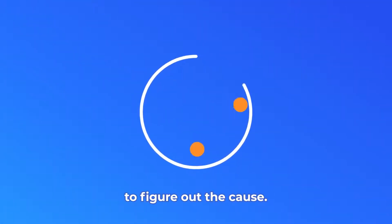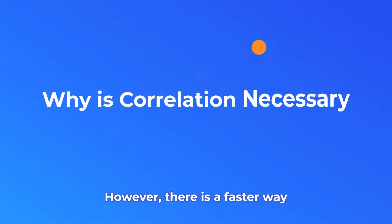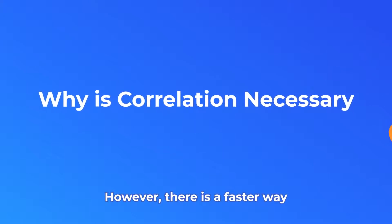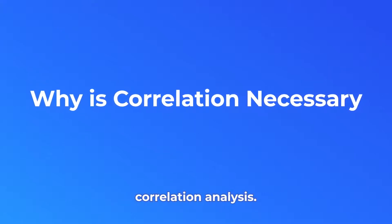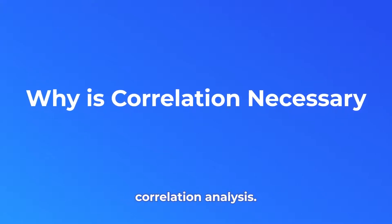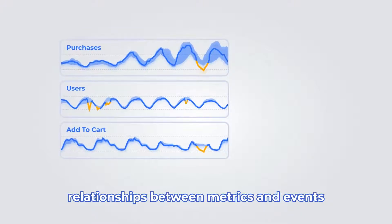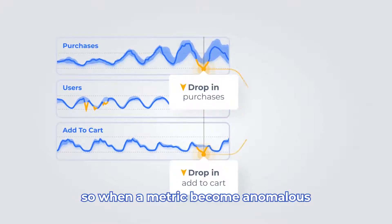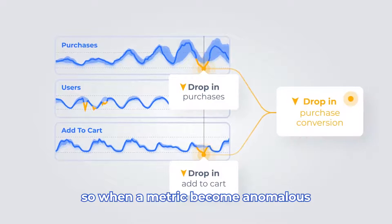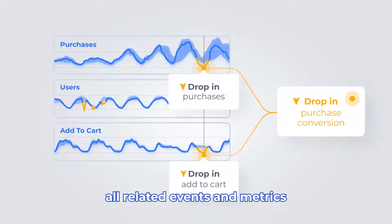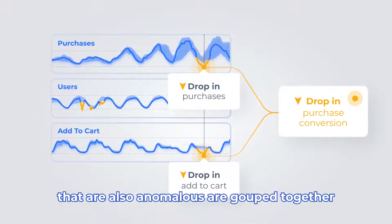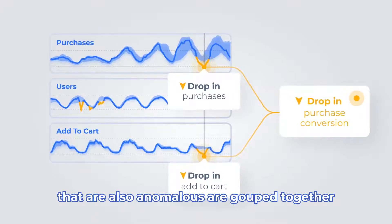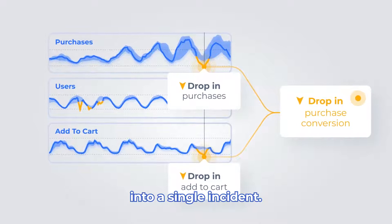Manually, it can take hours to days to figure out the cause. However, there is a faster way: using machine learning-based correlation analysis. Correlation analysis automatically discovers relationships between metrics and events, so when a metric becomes anomalous, all related events and metrics that are also anomalous are grouped together into a single incident.